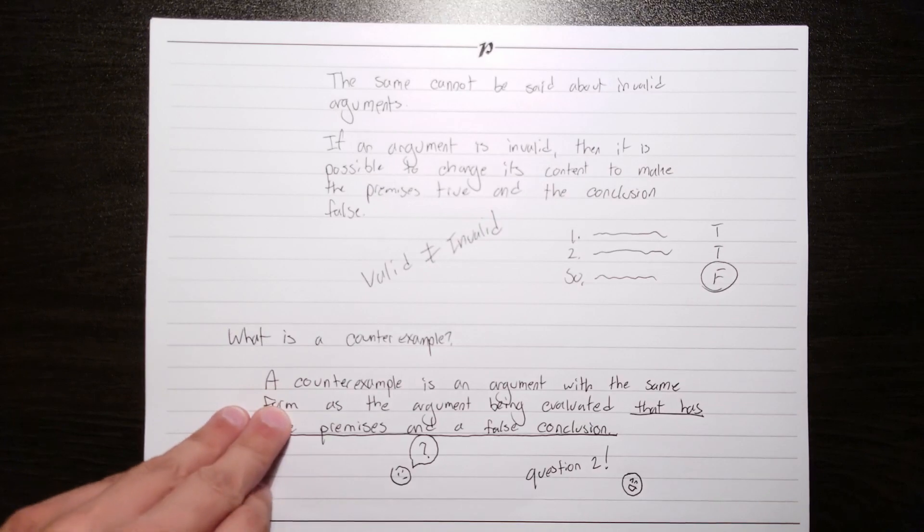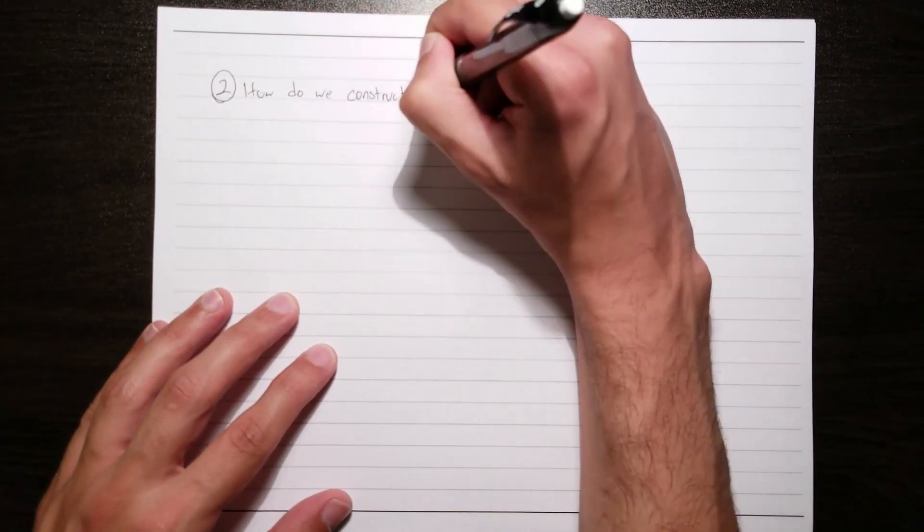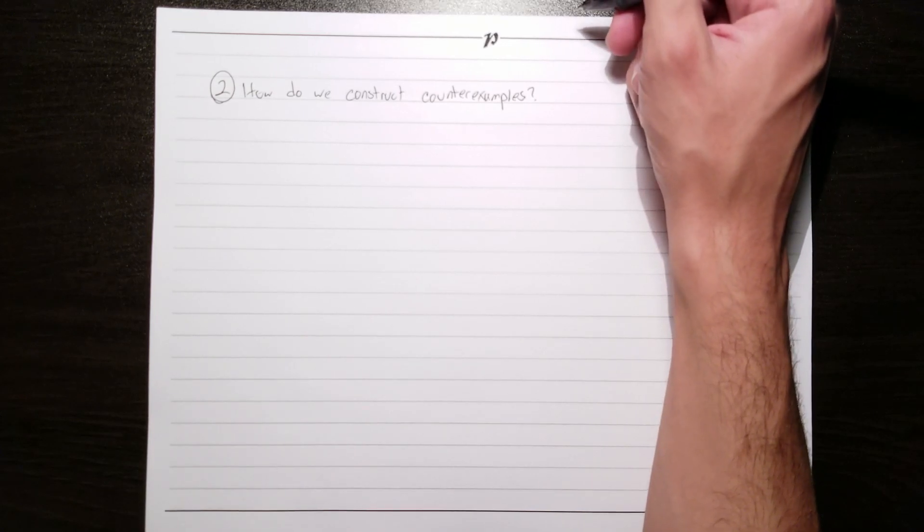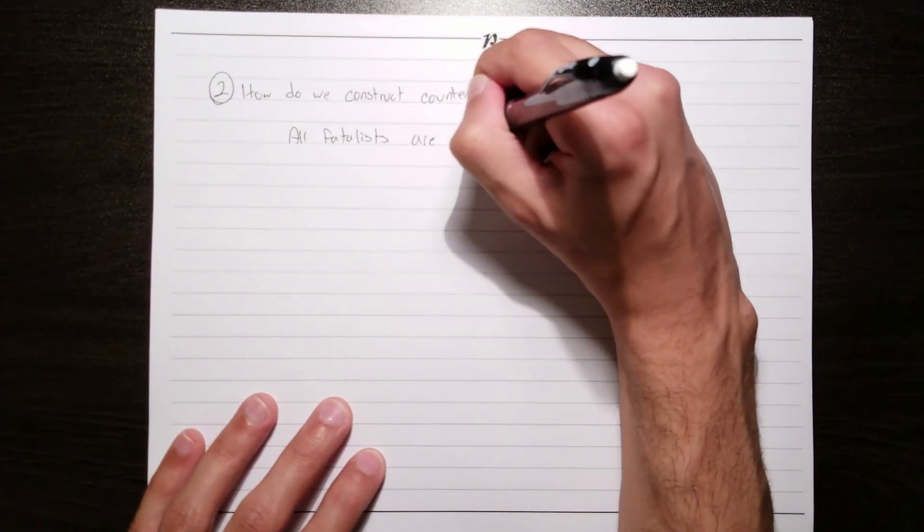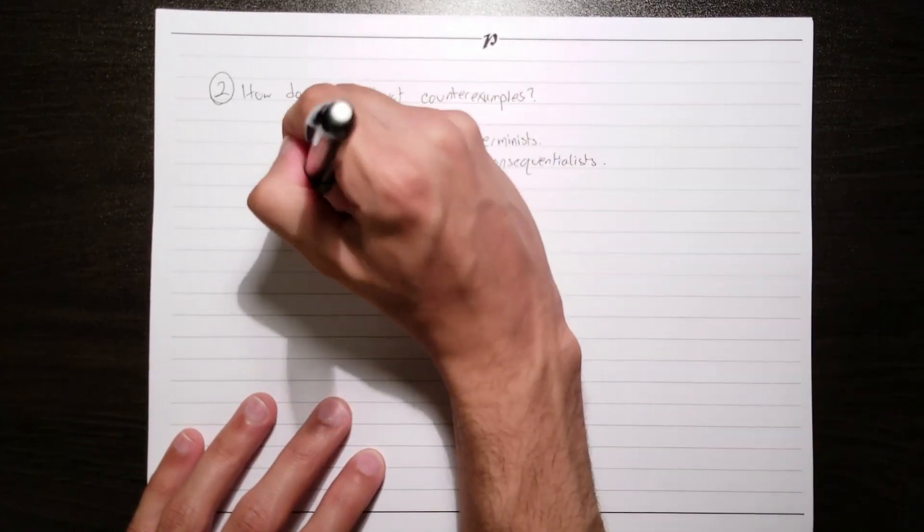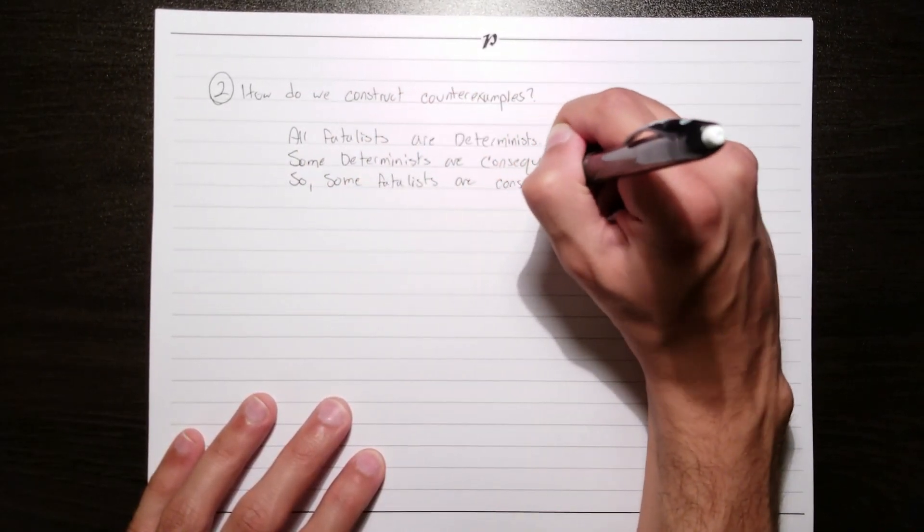So question two. How do we construct counterexamples? In order to work our way through this question, let's consider the intimidating argument from earlier. All fatalists are determinists. Some determinists are consequentialists. So some fatalists are consequentialists.